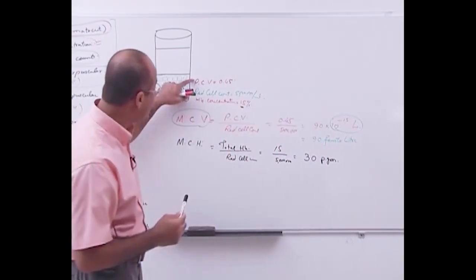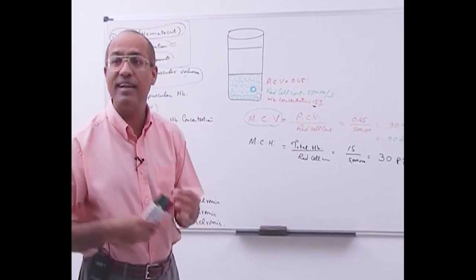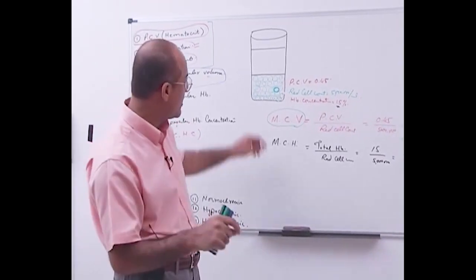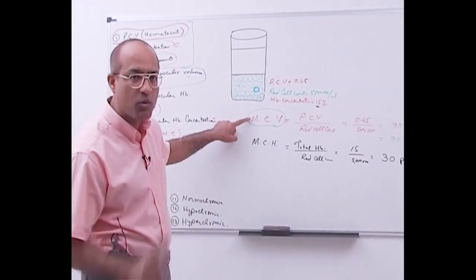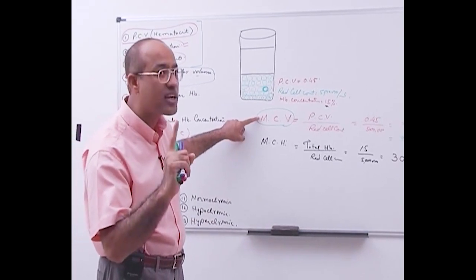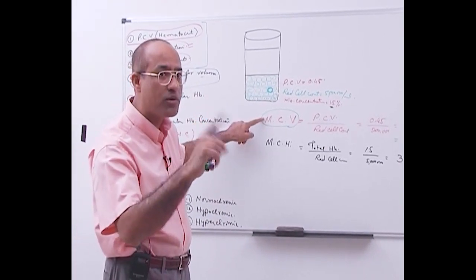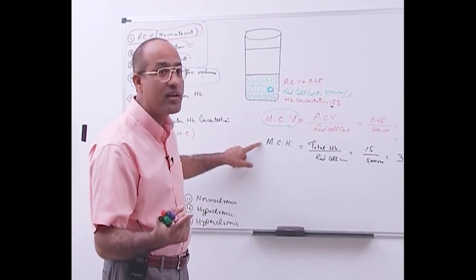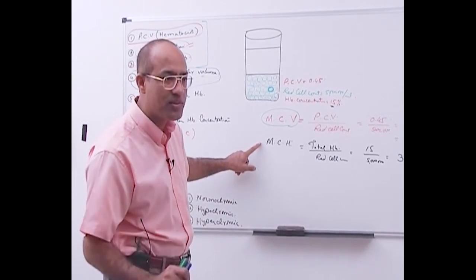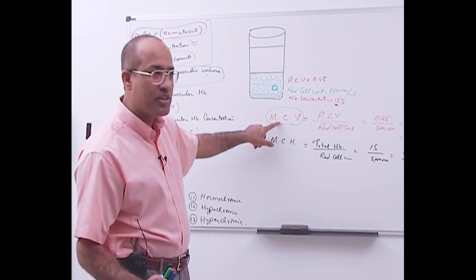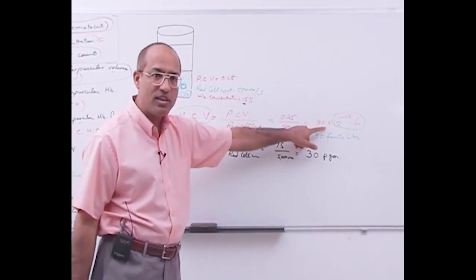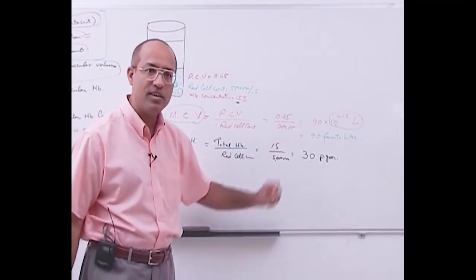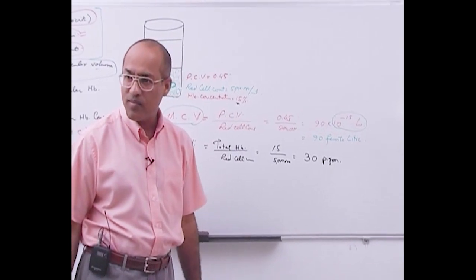From the original three basic values, we are now deriving the red cell indices - values describing one RBC. Mean corpuscular volume is the volume of one RBC: total volume (hematocrit or packed cell volume) divided by total number of RBCs. Mean corpuscular hemoglobin is total hemoglobin divided by number of RBCs. MCV is normally about 90 femtoliters and MCH is about 30 picograms.